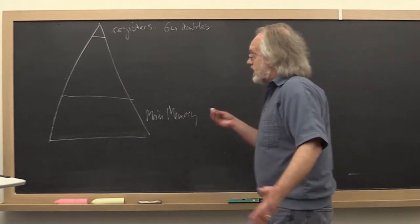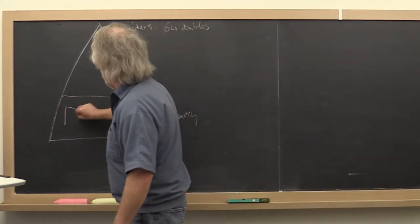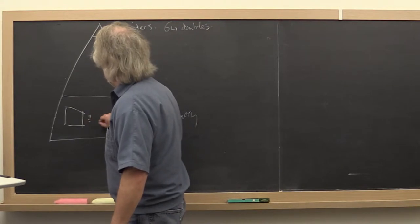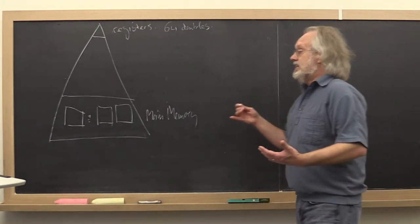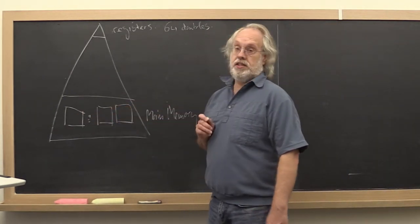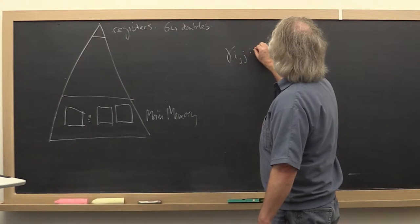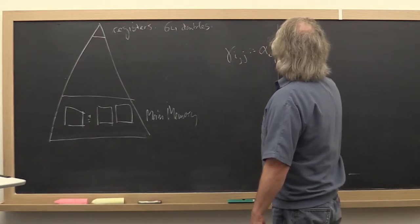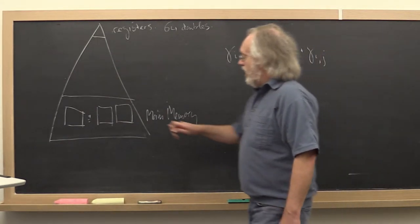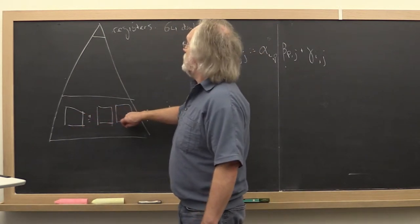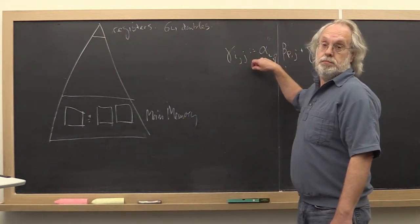So now typically our matrices are large. Our matrices will typically exist in main memory at some point in time. And if we want to compute with entries in this matrix, for example if we want to do a typical computation gamma_ij becomes alpha_ip times beta_pj added to gamma_ij, then the elements involved in that computation have to be brought into registers to be able to do this particular computation.